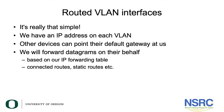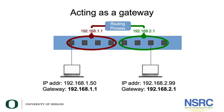It's really that simple: we have an IP address on each VLAN, other devices point their default gateway at us, and we forward datagrams on their behalf based on the IP forwarding table — connected routes, static routes, and so forth. The slide shows the Layer 3 switch acting as a gateway. Two laptops connected to the switch will have the default gateway on VLAN 10 set to 192.168.1.1 — the address we gave VLAN 10 — and the device on VLAN 20 will use 192.168.2.1 as its default gateway.